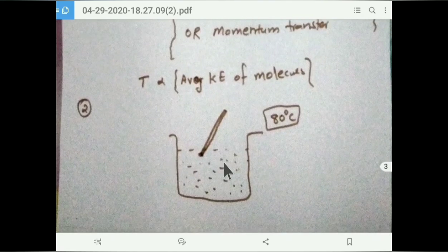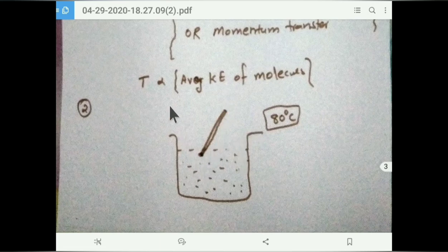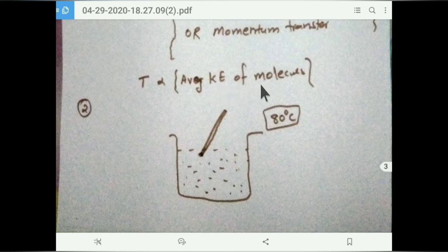Consider water in a beaker. The temperature of the water is measured by a thermometer — for example, 80 degrees Celsius. As per the classical approach, the entire liquid is a single large entity and the thermometer directly measures the temperature. But what is temperature actually? Temperature is proportional to the average kinetic energy of the molecules — more average kinetic energy means higher temperature, and less average kinetic energy means lower temperature.